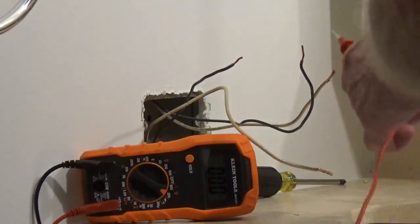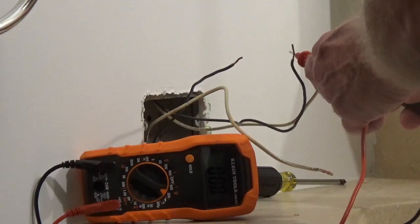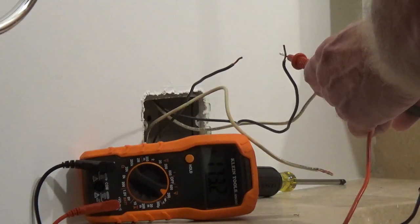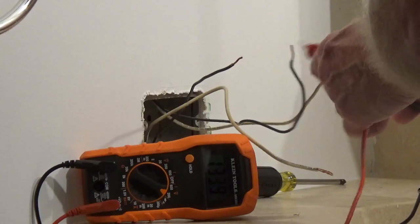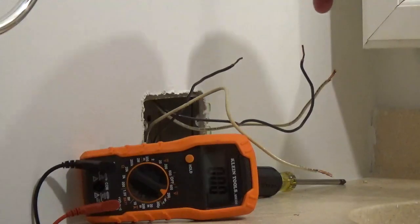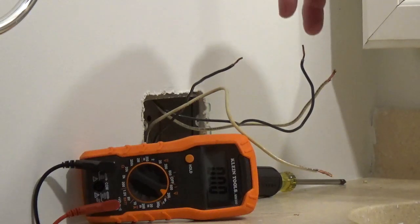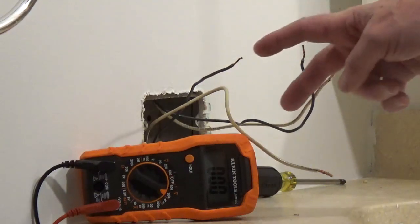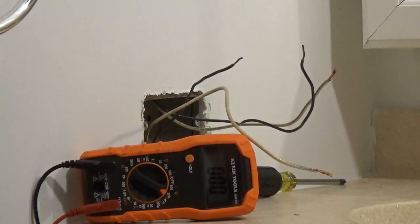So now I'm using my tester. I'm pressing it onto the hot wire and the neutral and you can see it's 120 volts. When I touch these two, there's nothing. So I know that these two wires are coming in from the service panel and now these are the two wires that I will connect to the line side of the GFCI. These two wires will be on the load side.